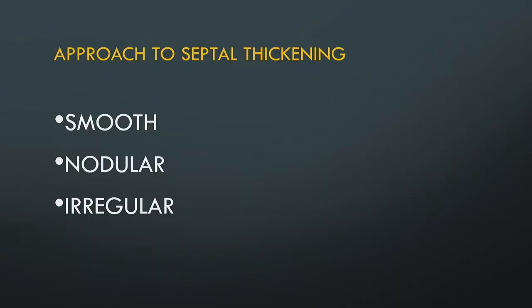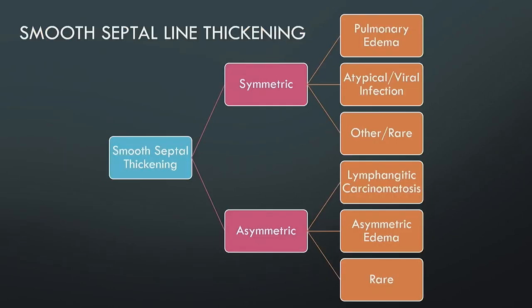How do we approach septal thickening? Once you recognize septal thickening, classify the morphology — smooth, nodular, or irregular — as this will guide your differential diagnosis. If you have smooth septal thickening, ask whether it is symmetric and bilateral or asymmetric and unilateral. If symmetric and bilateral, the differential mainly includes pulmonary edema or atypical/viral infection. If asymmetric, think about lymphangitic carcinomatosis or asymmetric edema. There are also other rare etiologies.